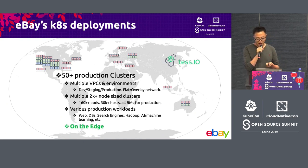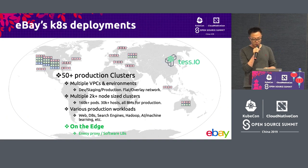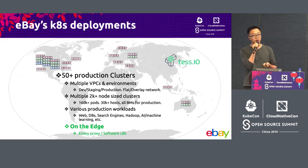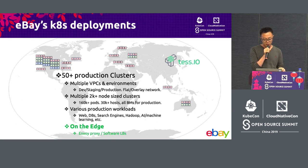We are also running on the edge. We have around 15 edge clusters across the world, and we are running our Envoy edge proxies as well as software load balancers on top of Kubernetes there, where we do a lot of SSL termination and web caching to accelerate our remote eBay users' experience. We are rapidly growing our footprint on the edge as well. Our ultimate goal is to unify our fleet with Kubernetes and we are trying our best to get there.